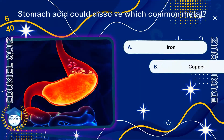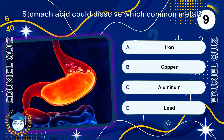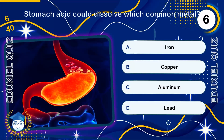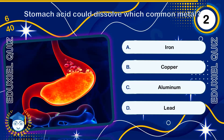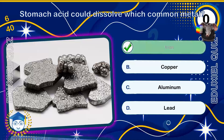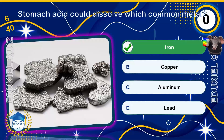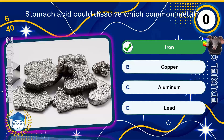Stomach acid could dissolve which common metal? Iron. Stomach acid, pH 1.5 to 3.5, is strong enough to dissolve most metals. But the stomach protects itself with a thick, constantly renewed layer of mucus.